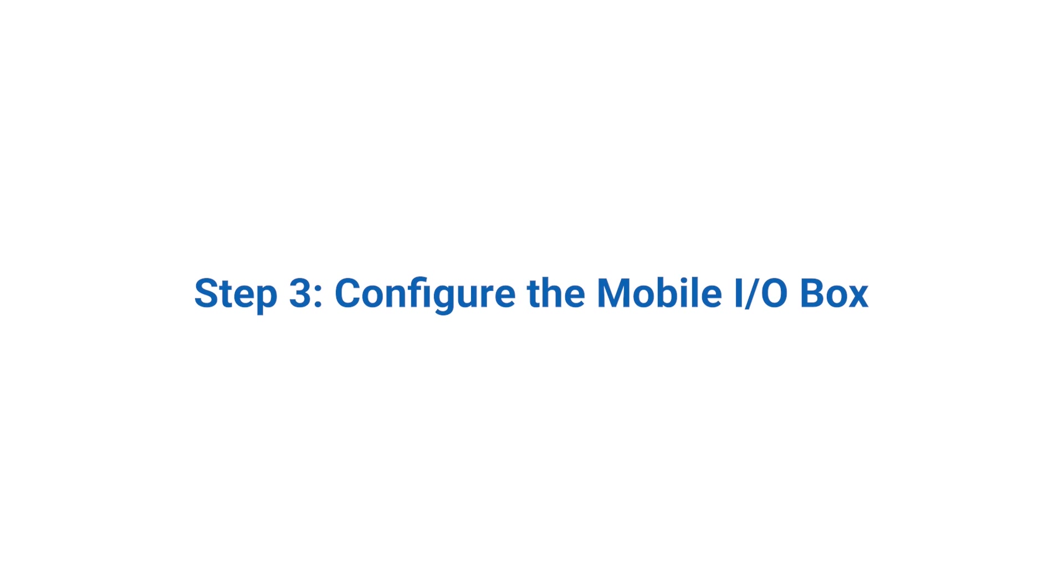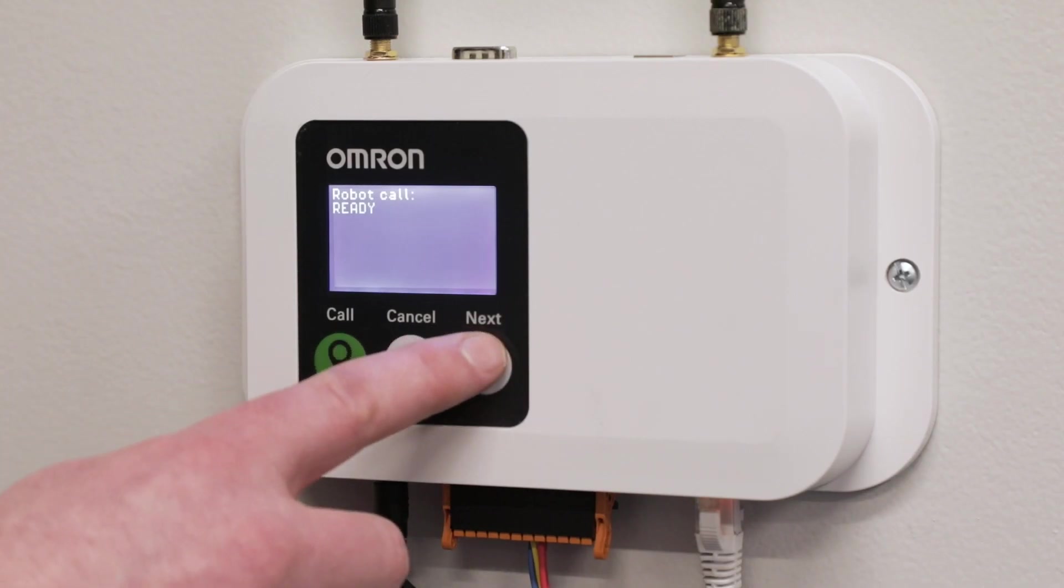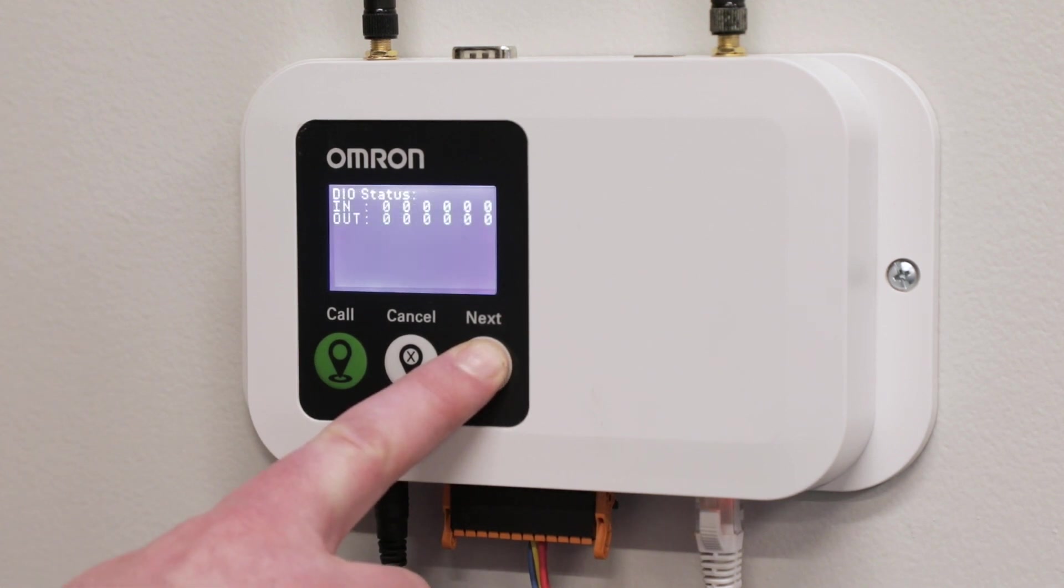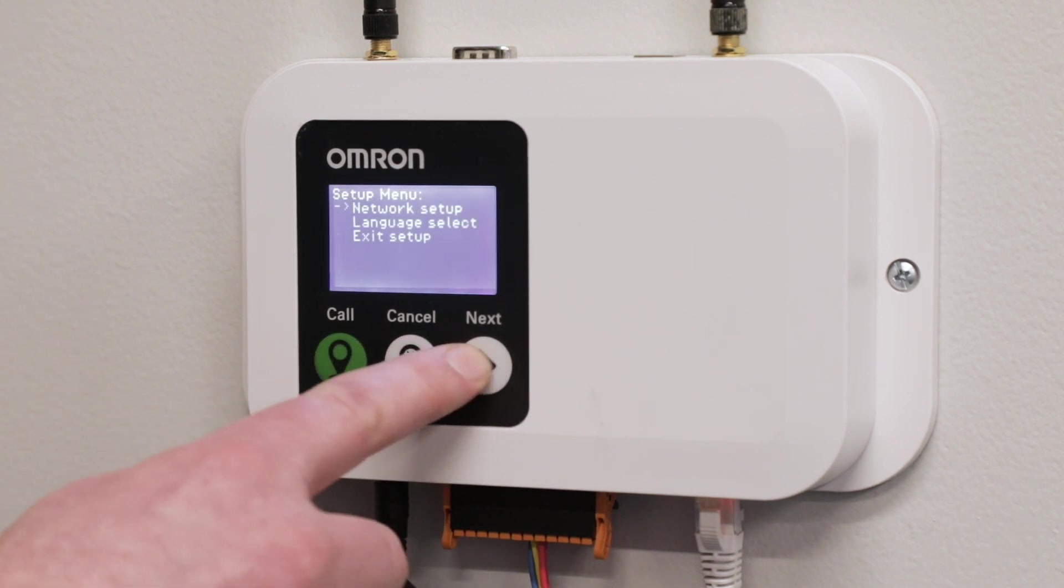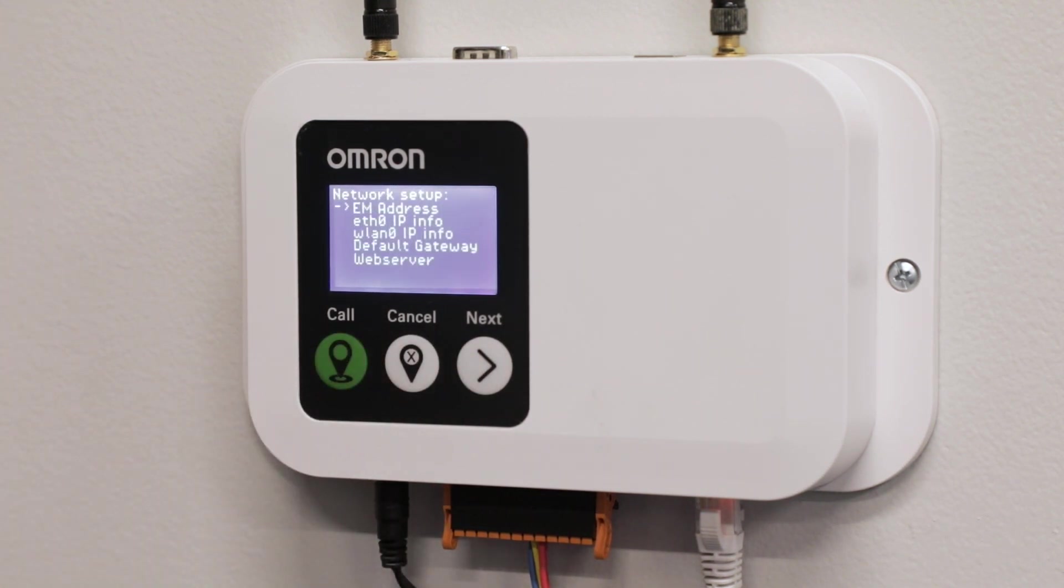Step 3. Configure the Mobile I.O. Box. Enable communication between the Mobile I.O. Box and the host by navigating to the Setup menu and selecting Network Setup. In the Network Setup menu, you can configure the host IP address as well as the network settings of the Mobile I.O. Box itself. The host could be the fleet manager or an AMR.